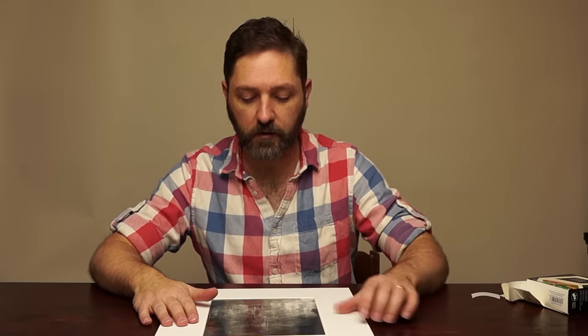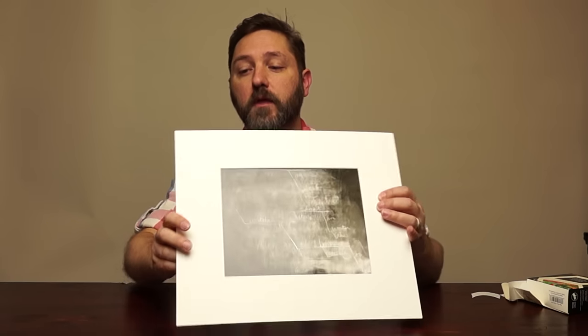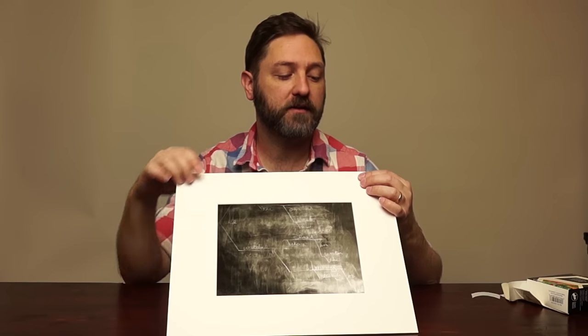So the advantage of a dry mount is that it is completely flat. It doesn't have any kind of ripples or waviness that all the other mounts have. And that's because it is permanently adhered every square millimeter to the board behind it. And the flatness of the board behind it determines the flatness of the print. So a four-ply mat like this, pretty flat. You want even more than that? Go get yourself some aluminum or, I don't know, a Dibon board or anything like that. And that will do it too.